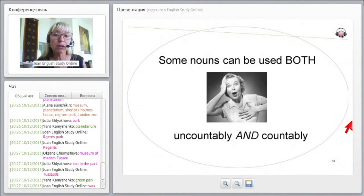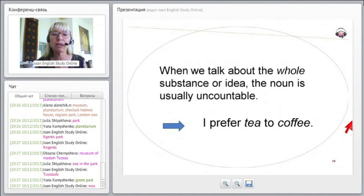Okay, some nouns can be both used uncountably and countably. So let's look and see what examples we have for this.